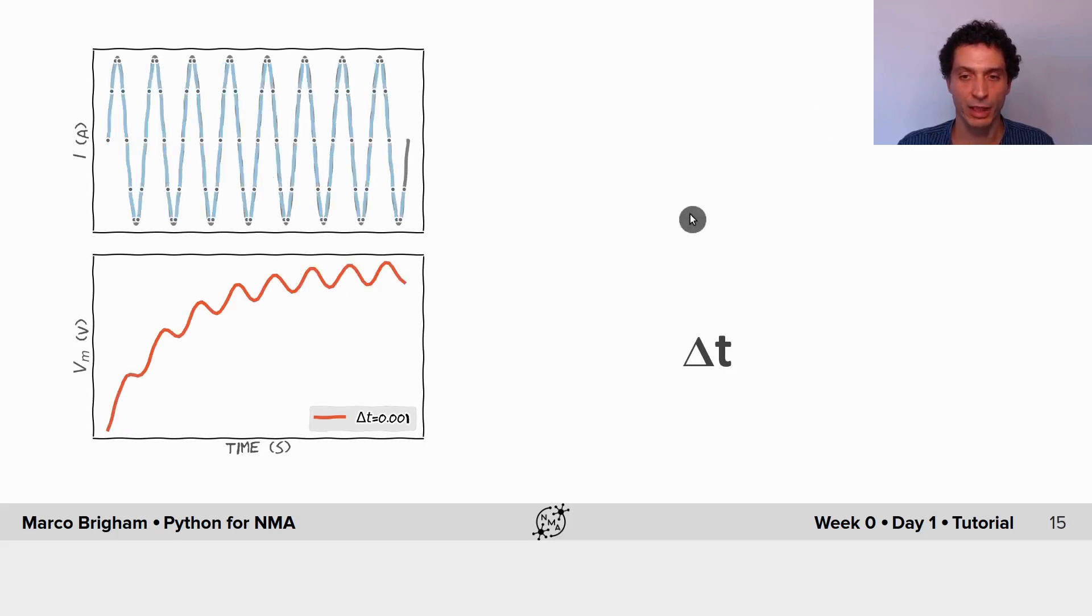But we've already selected a good starting point for delta t, which is about one millisecond.